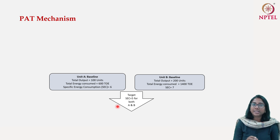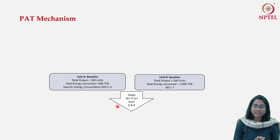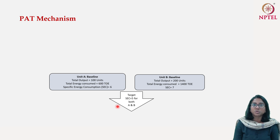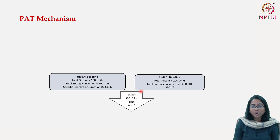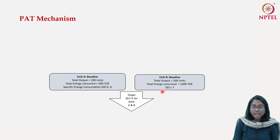They did a very rigorous job — they delayed implementation a bit, collected detailed data from each unit, and came up with a specific target for each one. PAT was supposed to be launched in 2010 but was delayed. Let us assume these two units are representative of the 428 units in the first cycle of PAT, both receiving targets to reduce their SEC — one from 6 to 5, the other from 7 to 5.